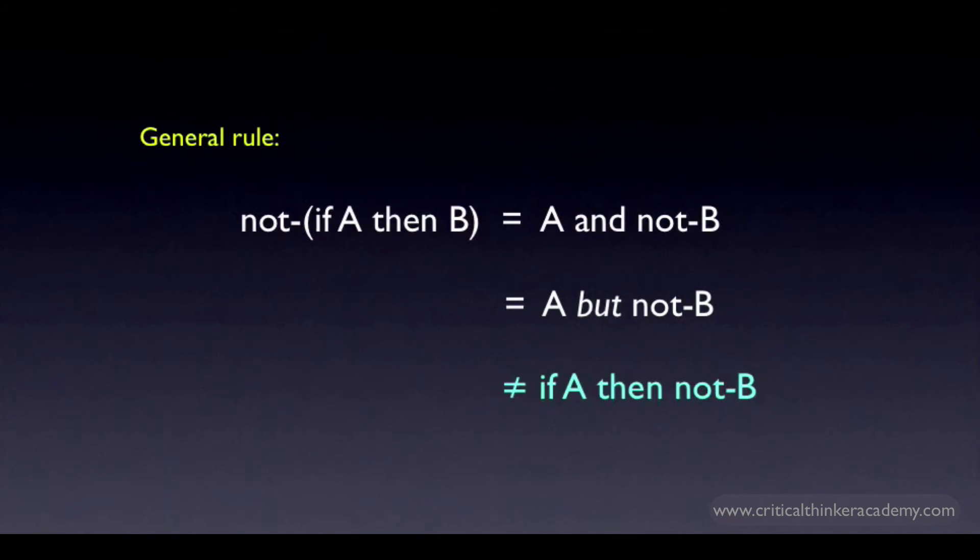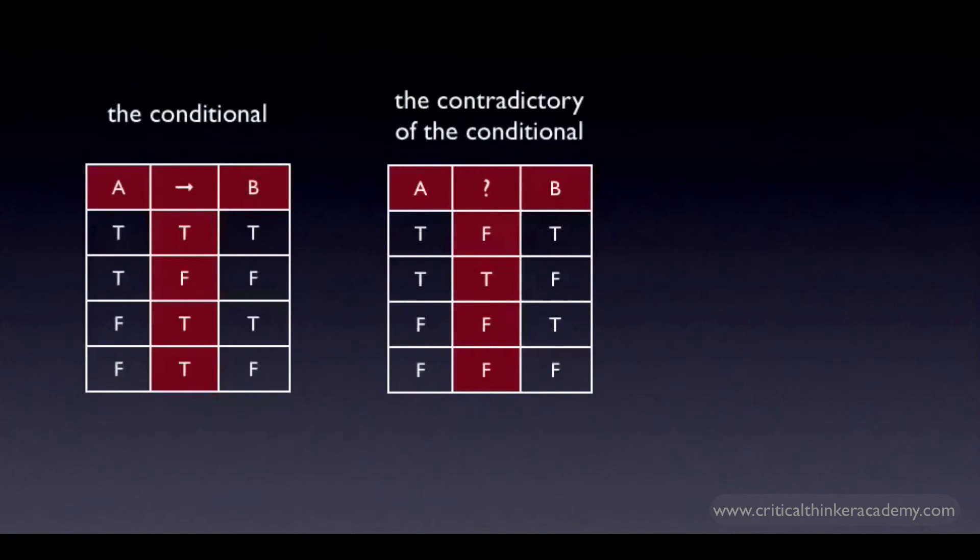On the left is the truth table for the conditional. The conditional is true for all truth values of A and B except when A is true and B is false.